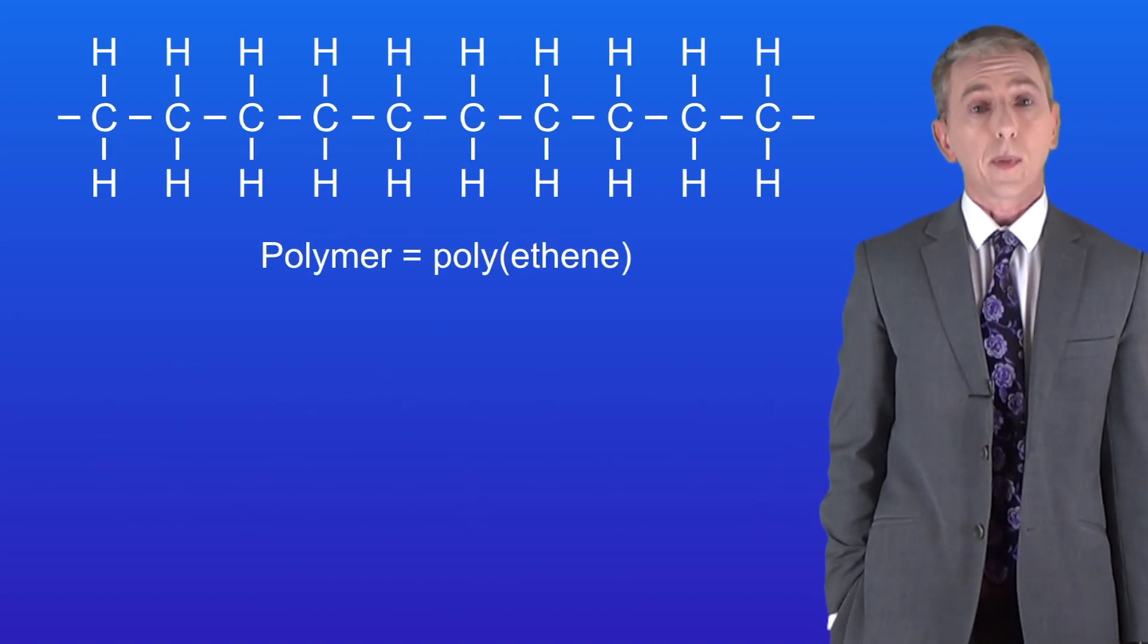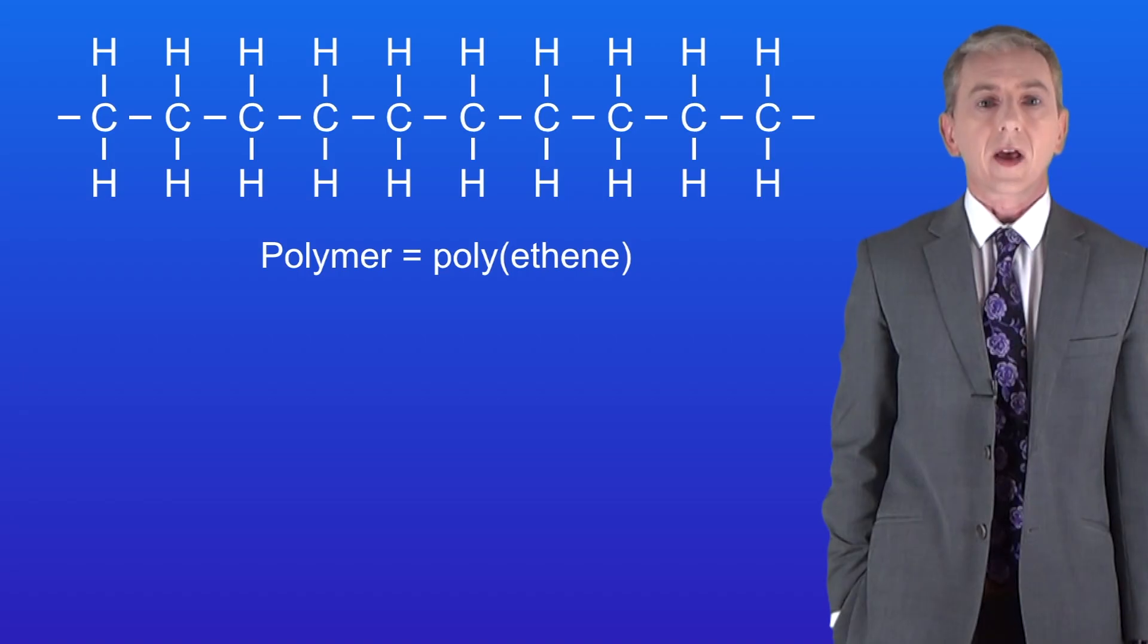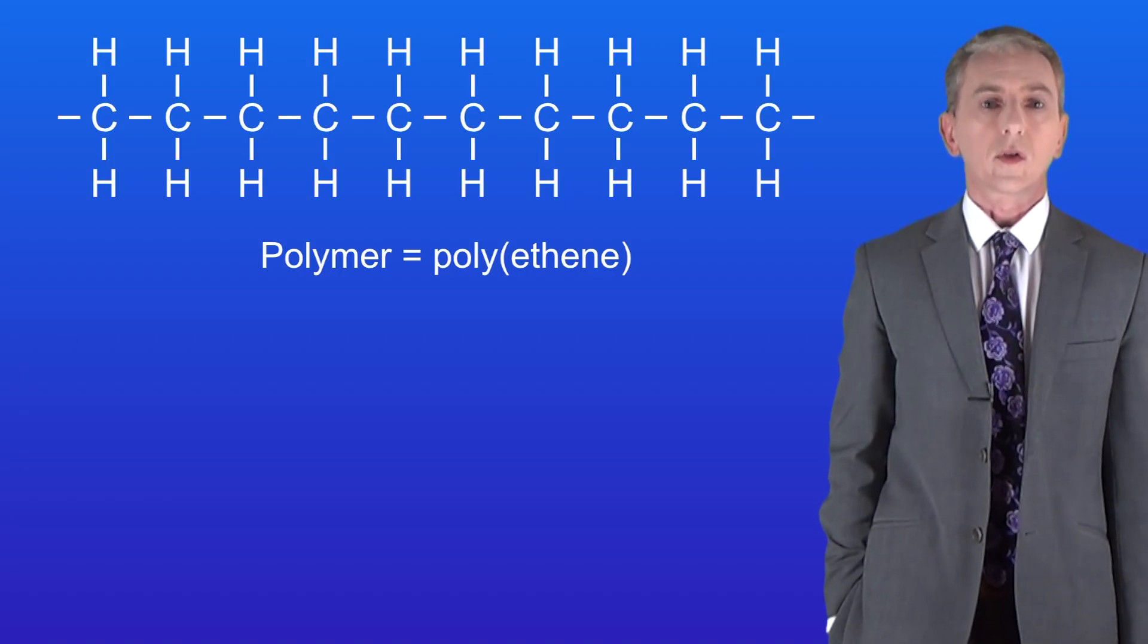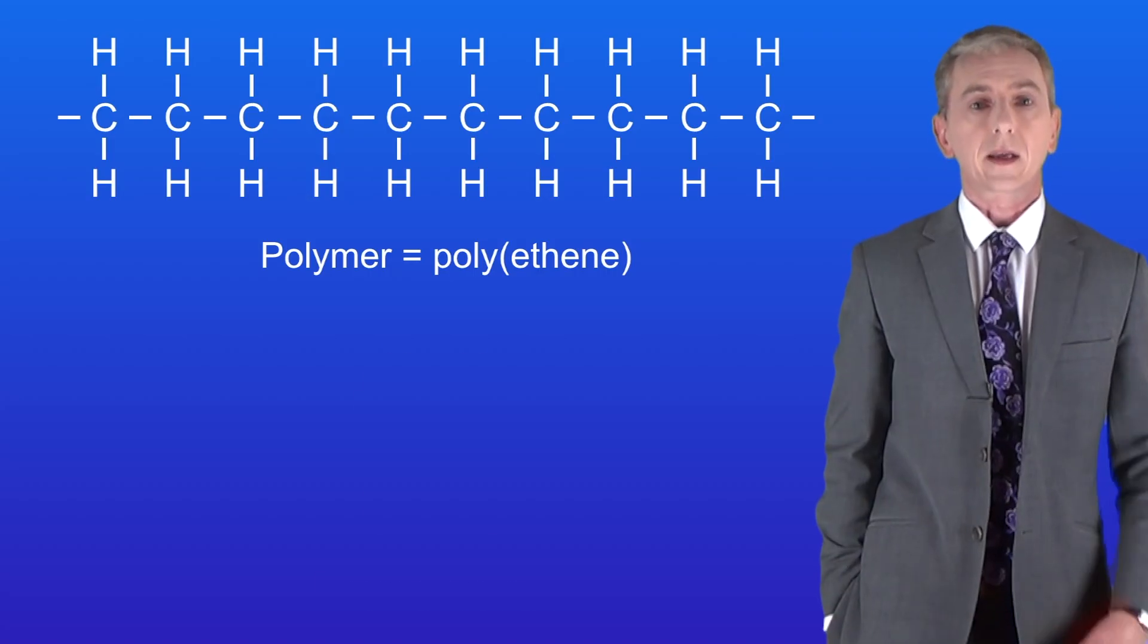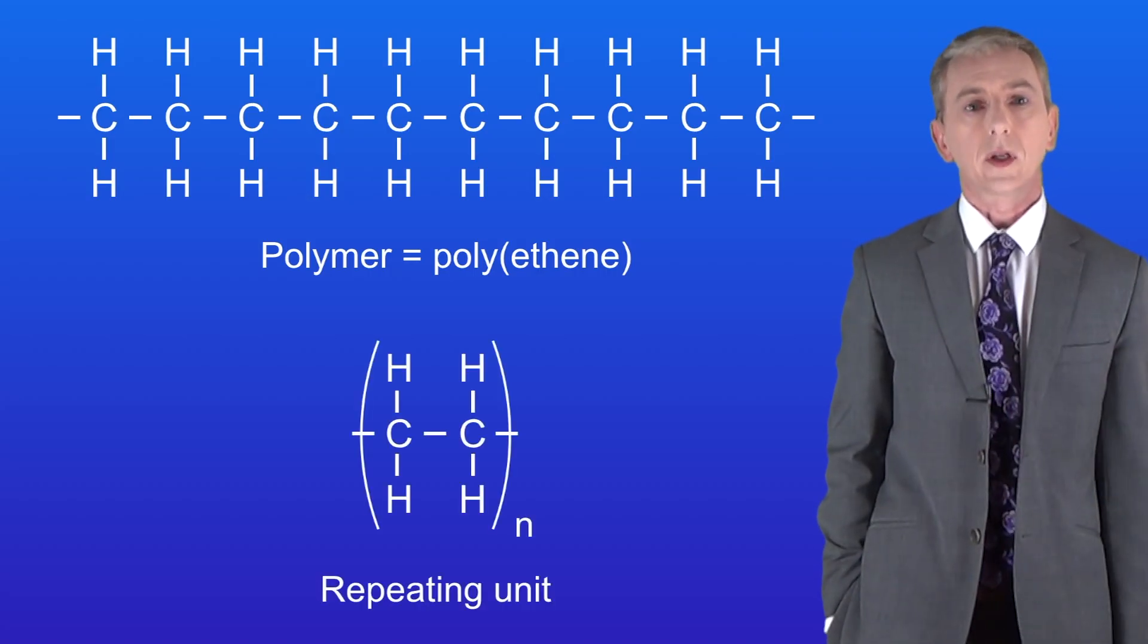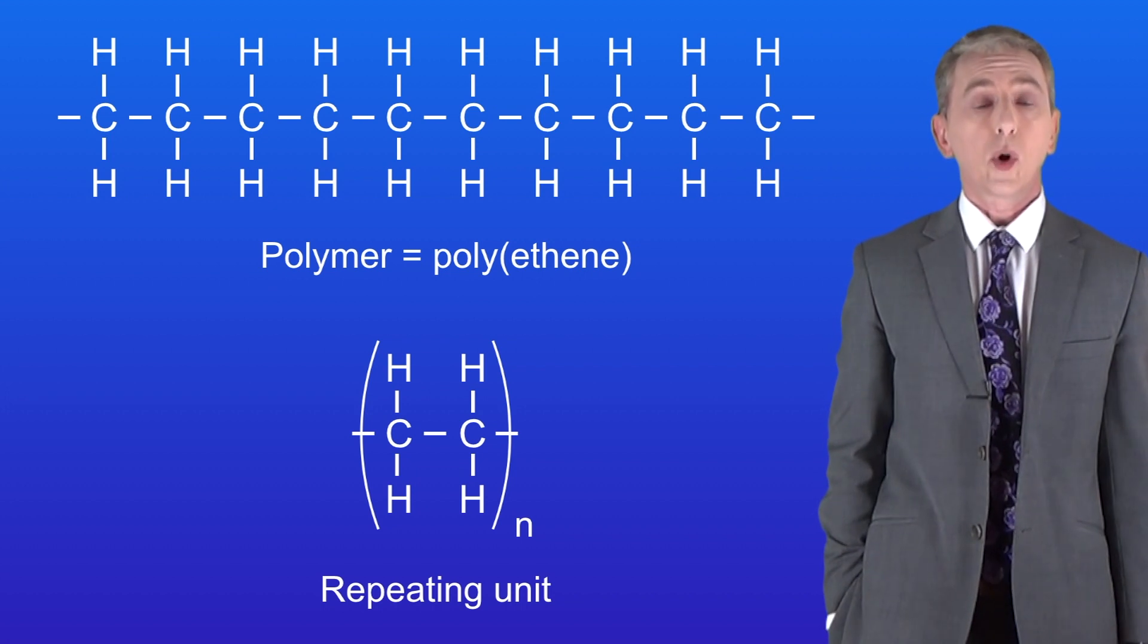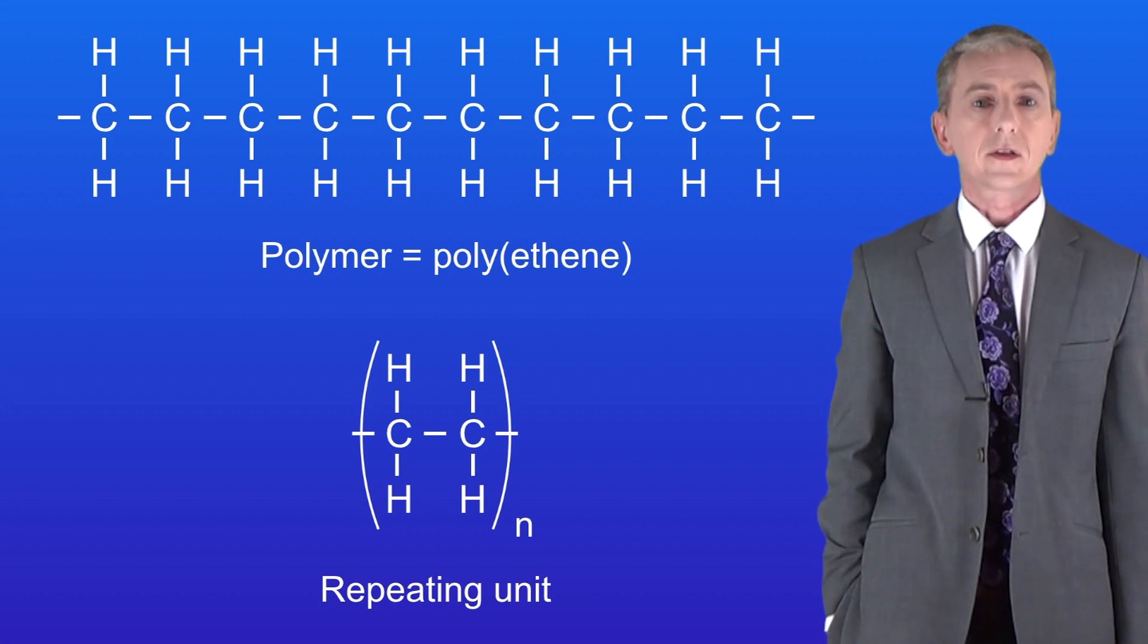Now there is one problem with drawing a polymer such as this and that is that there are lots of atoms and covalent bonds to draw so scientists usually draw it in a shorthand way like this. This is called the repeating unit. There are three important details about the repeating unit that you need to learn.